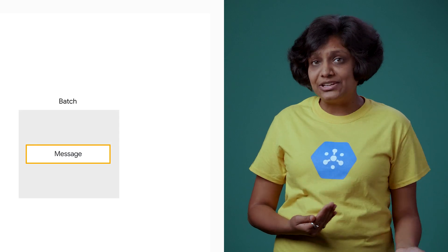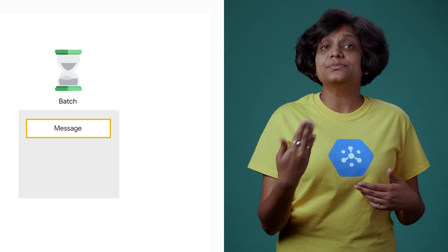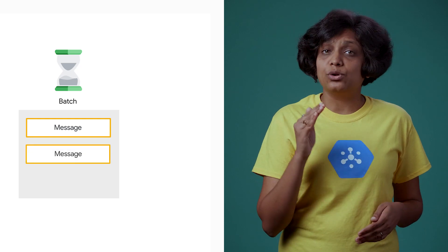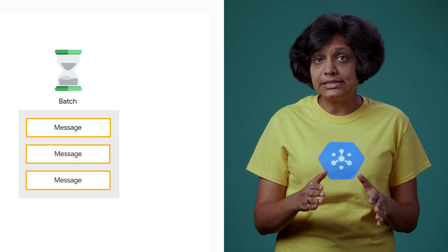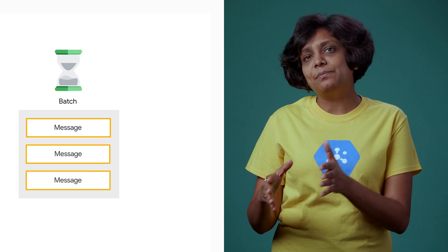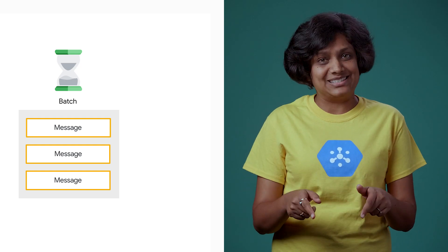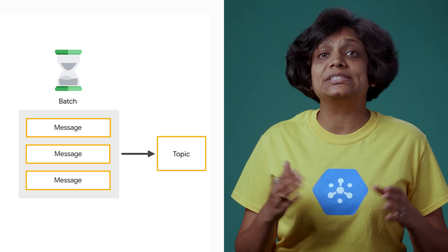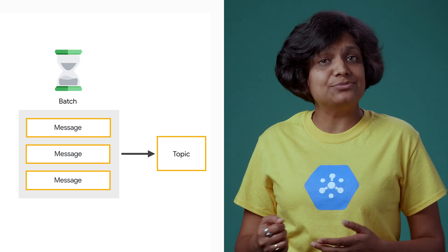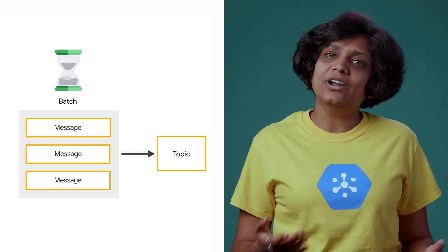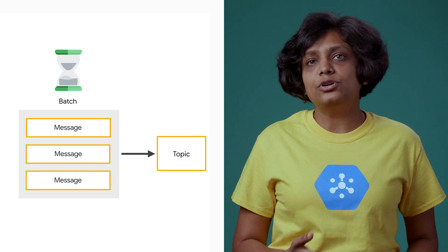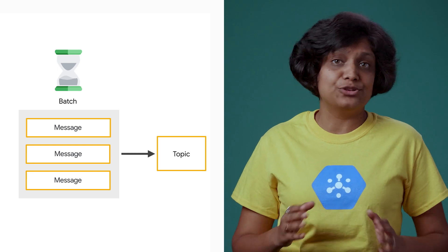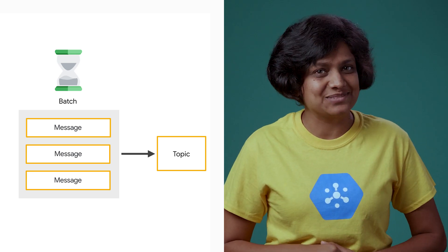Here's how this works. On the first message that you send, a new batch is automatically created with a countdown. For every subsequent message, if there's already a valid batch that is still accepting messages, then that batch is used to drop the new message. The batch is published once sufficient time has elapsed, maximum messages has reached, or maximum bytes is met. By default, the batch setting is set to 0.05 seconds.